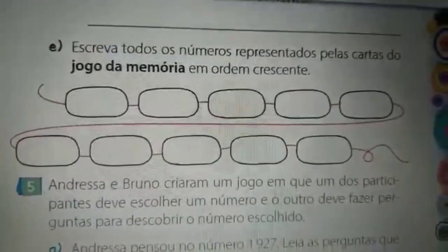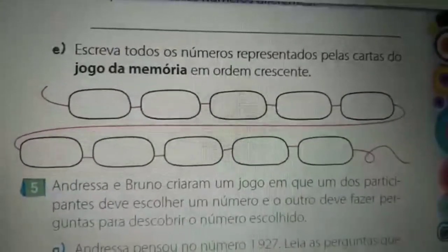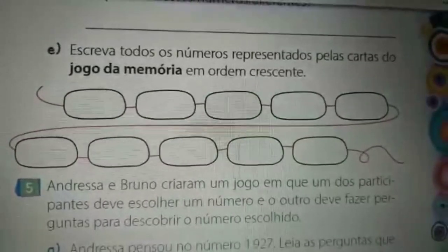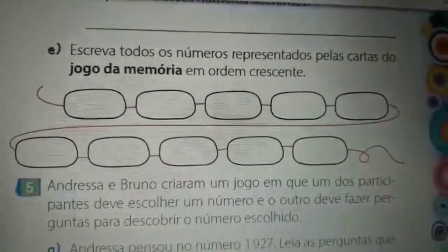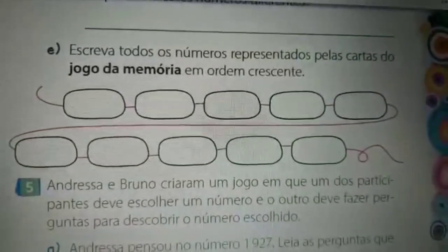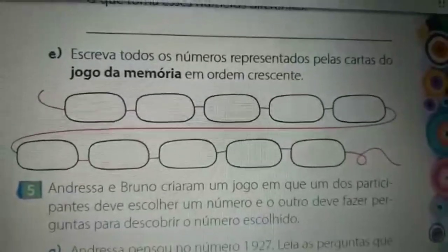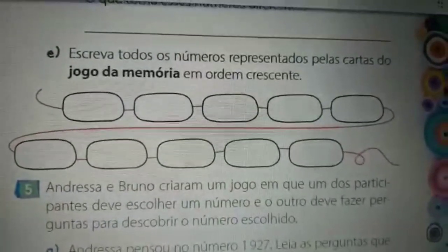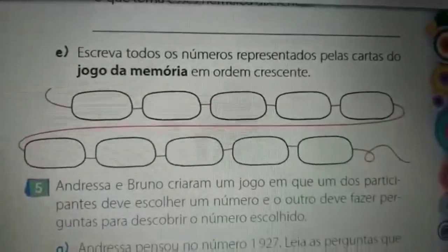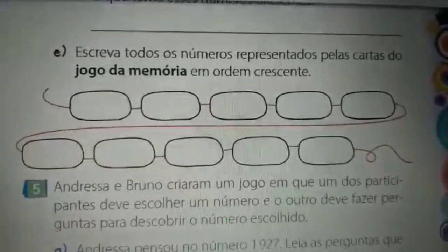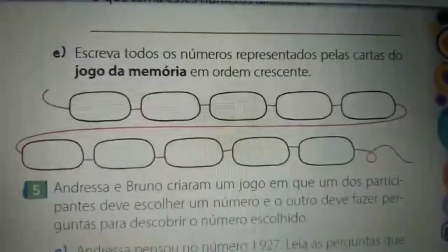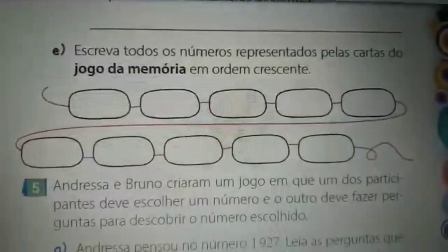A questão de letra E: vocês vão escrever todos os números que foram representados pelas cartas do jogo da memória em ordem crescente. Nós sabemos que a ordem crescente é do menor para o maior. Então, vocês vão retornar à página 34 e analisar os pares que Caetano formou e os pares que Mateus formou. Vocês vão perceber qual é o menor número e, em seguida, escrever a sequência do menor número até finalizar o último quadrinho.